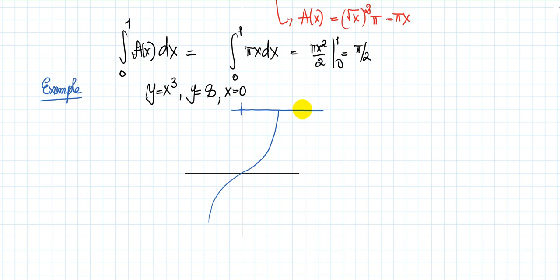And x equals 0 is this vertical line — no matter which point you choose on it, the x-coordinate is 0. So you've got this enclosed region. What you need to do is rotate this region around the y-axis, and you will have this kind of object. Find its volume.